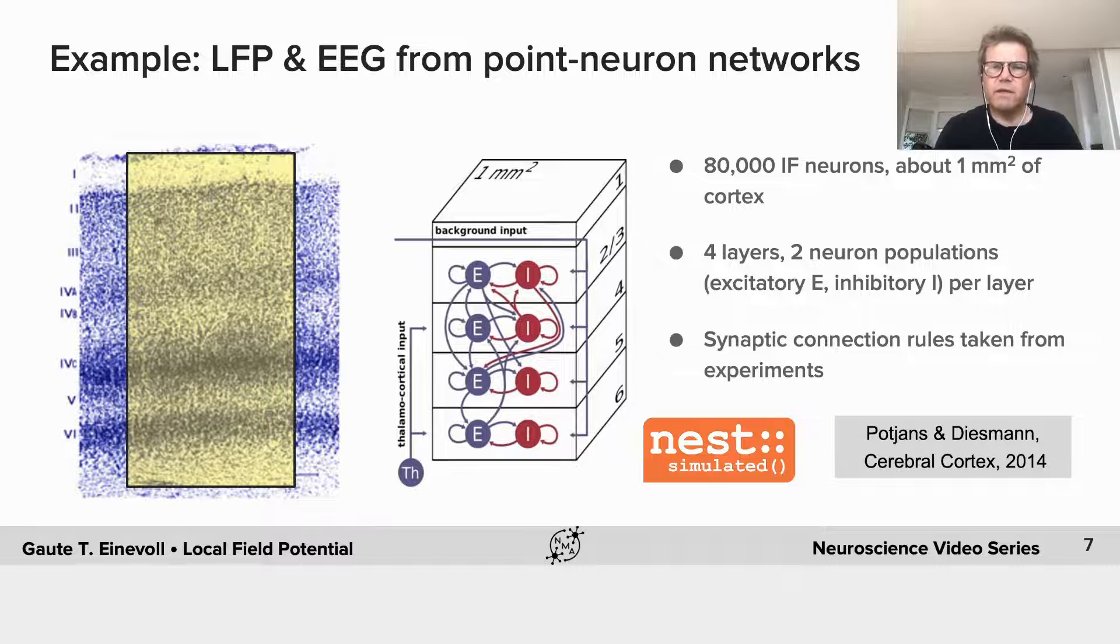But anyway, it's a model of a piece of cortex. However, this model, here the models are integrate-and-fire neurons. And these are point neurons. So they don't have a spatial extension. And a point neuron, it's a single compartment, and single compartment neurons cannot generate extracellular potentials.